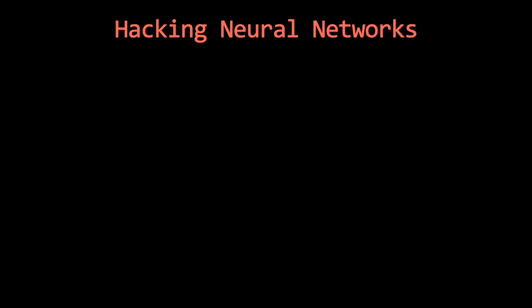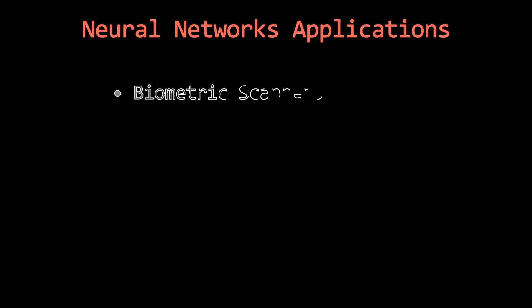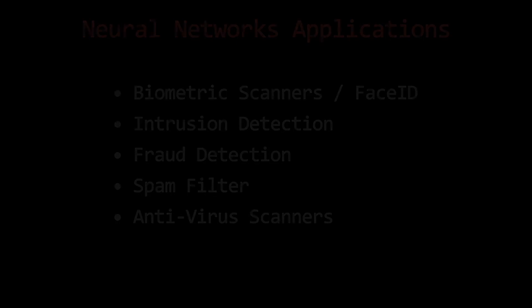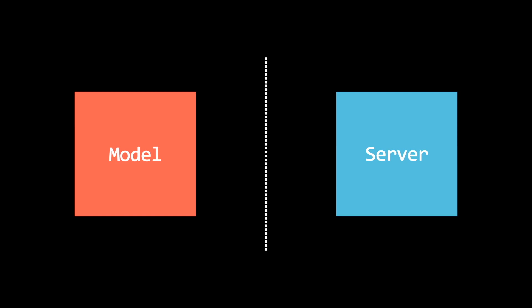Before we jump to the code, let's have a look at some example applications. Neural networks are applied in many different types of applications, even in security-relevant apps. They can be used for biometric scanners like Face ID, intrusion detection, fraud detection, spam filters, antivirus scanners, and many more. Now in many production systems, the deep learning model is actually deployed completely separately. And while the server code and the database are well protected, oftentimes we forget to protect the model. For an experienced hacker, having access to this model can be almost as good as having access to the rest of the code.